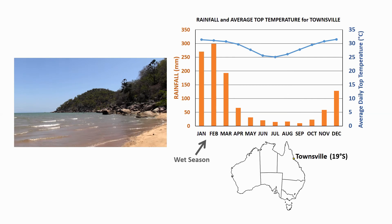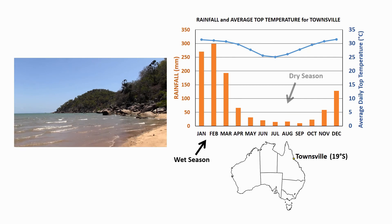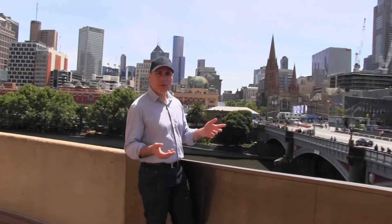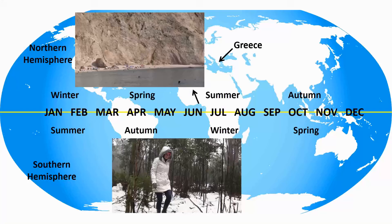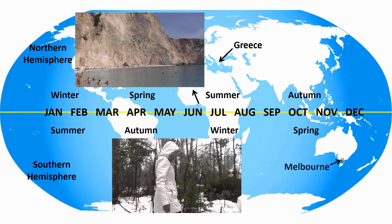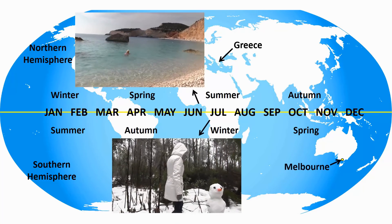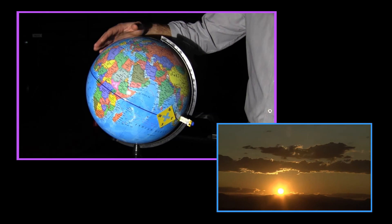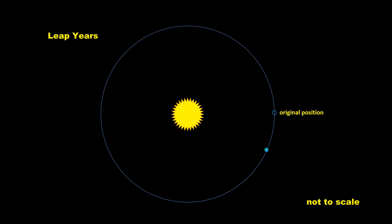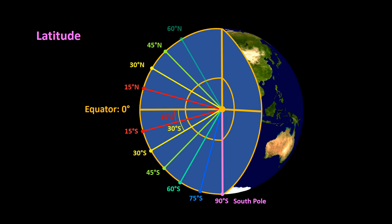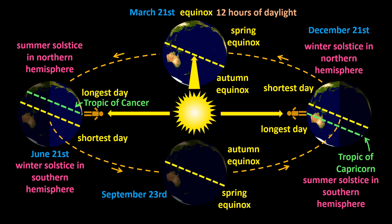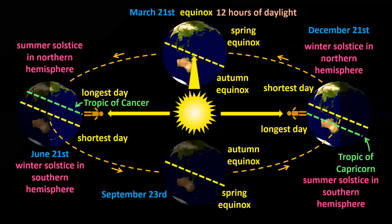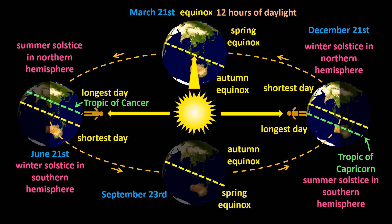Like all of our programs, Seasons comes with an outstanding student activity sheet. Visit the Liakos Educational Media website to download the sheet and to find out how you can watch the whole program. You'll also discover all of the other programs in the Shedding Light series — they are revolutionising science education. Don't forget to like and subscribe. See you next time.